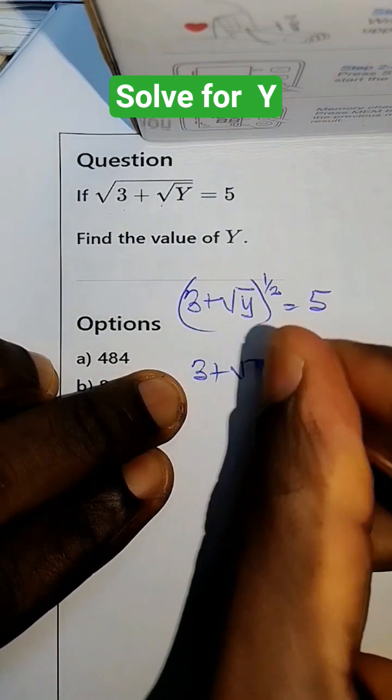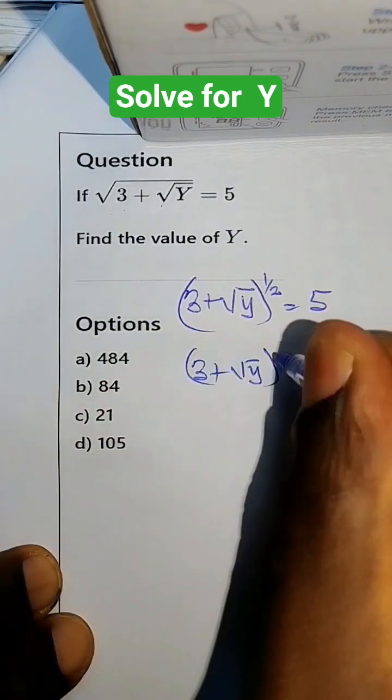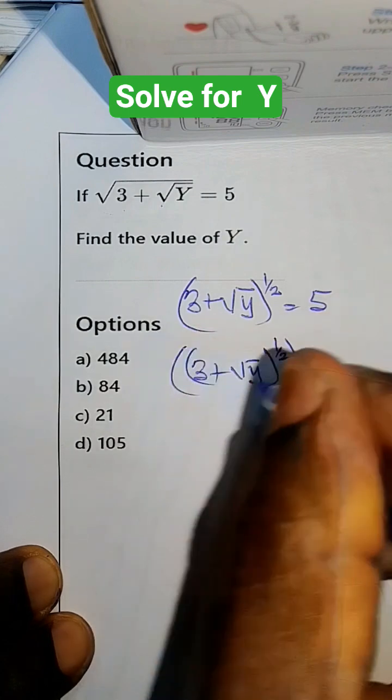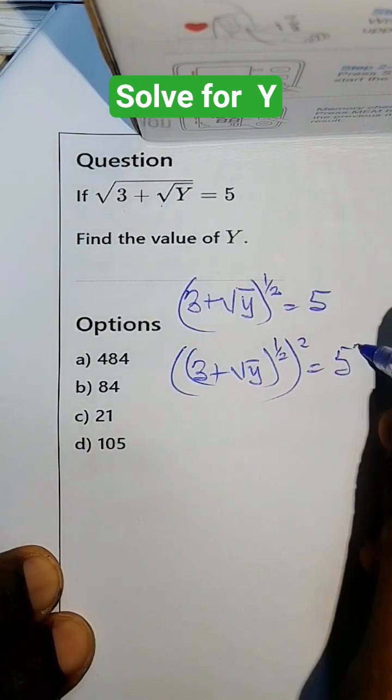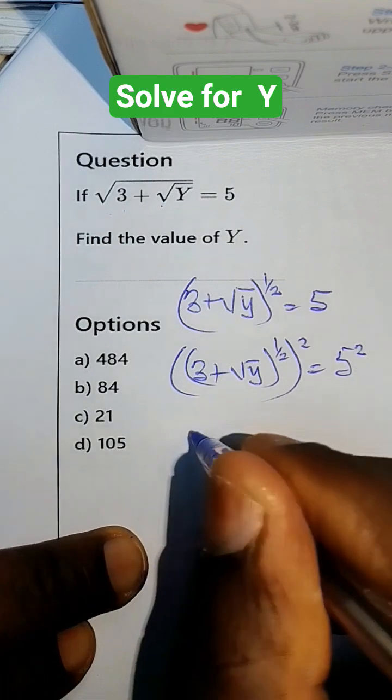What do we have? We have 3 plus root y raised to the power half, squared, equals 5 squared, which equals 25.